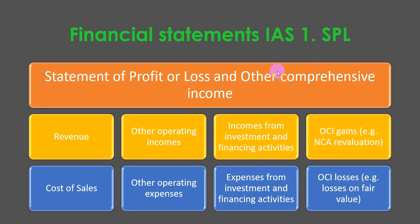Statement of profit or loss and other comprehensive income. This statement contains information about revenue, cost of sales, other operating incomes, other operating expenses, income from investment and financing activities, expenses from investment and financing activities, other comprehensive income gains — for example, gains on non-current assets revaluation — and other comprehensive income losses — for example, losses on fair value changes — which must be disclosed in the other comprehensive income section.